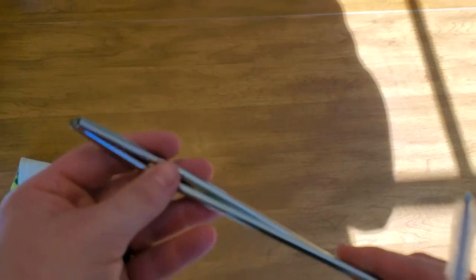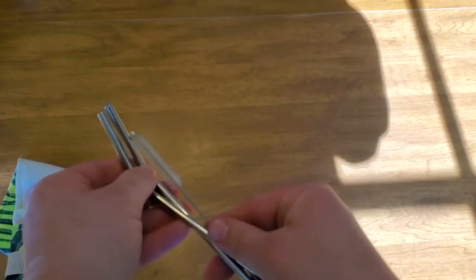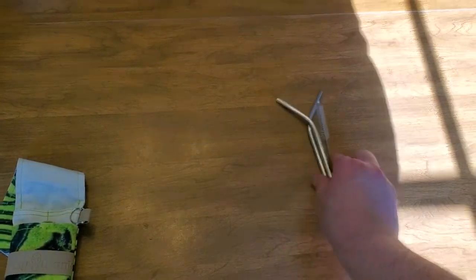There's two metal straws, and they go all the way through, obviously, and then your metal straw cleaner. Set that off to the side.